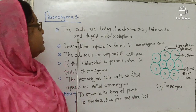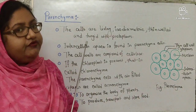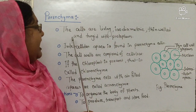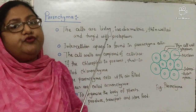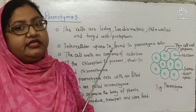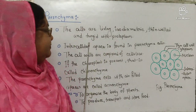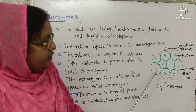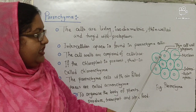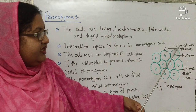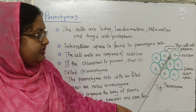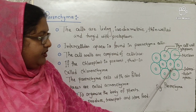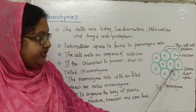Now, first of all, the characteristics of parenchyma. The cells are isodiametric with thin walls and filled with protoplasm. That means the amount of protoplasm in the parenchyma cell is higher than that of other cells. Intercellular spaces are found in the parenchyma cell. Here is the diagram of parenchyma tissue — the cell has a thin wall, dense cytoplasm, nucleus, and intercellular spaces.